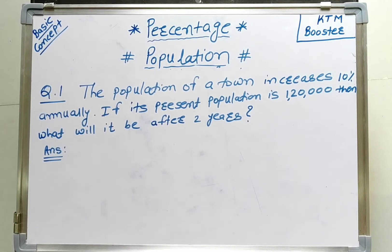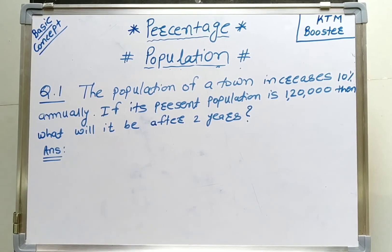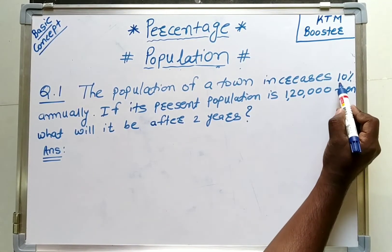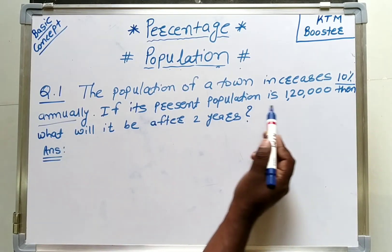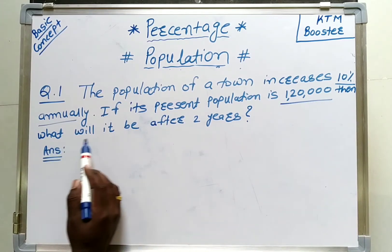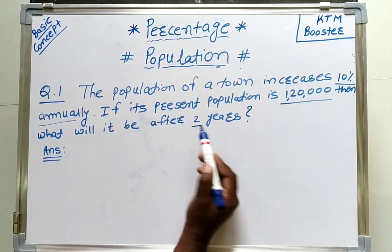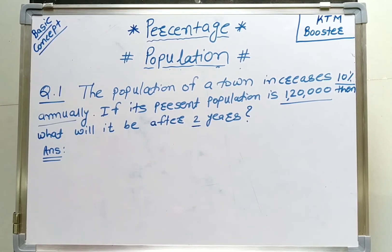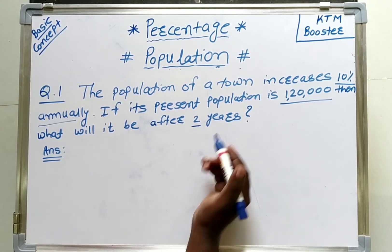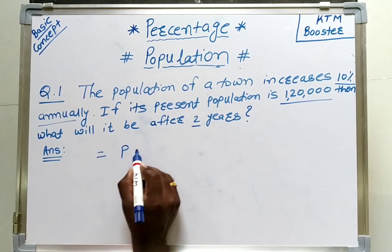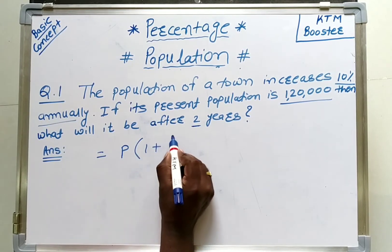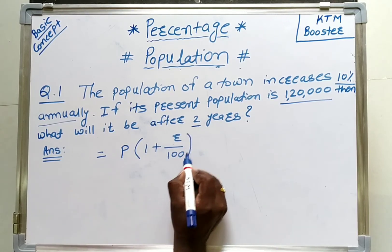Now we will see two questions based on population. The first question: the population of a town increases by 10% annually and its present population is 1,20,000. What will it be after 2 years? Here the value of n is 2. The basic formula for the calculation of population after n years is P into 1 plus r upon 100, raised to n.